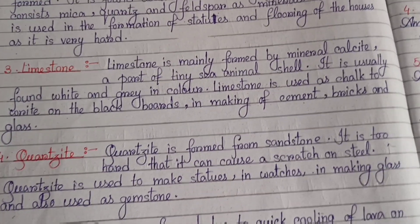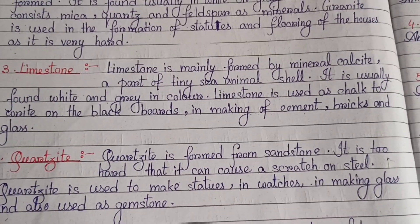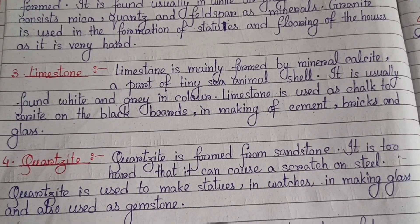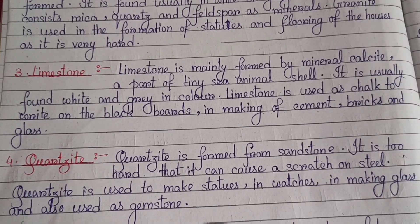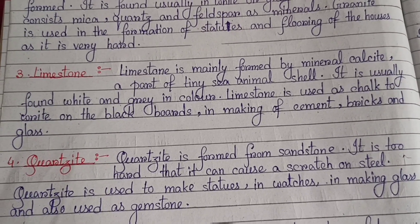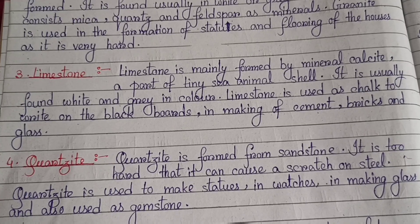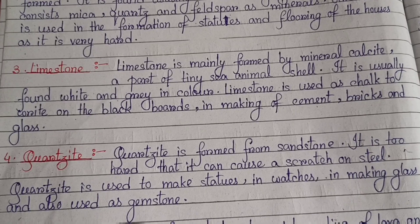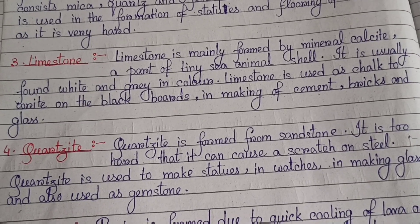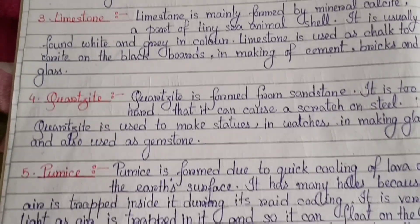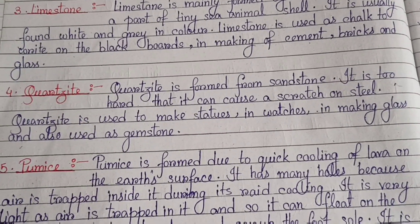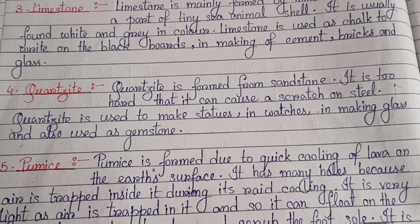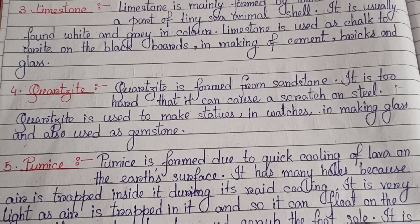Number three: Limestone — limestone is mainly formed by mineral calcite, a part of tiny sea animal shells. It is usually found white and gray in color. Limestone is used as chalk to write on the blackboard, and in making of cement, bricks and glass. Number four: Quartzite — quartzite is formed from sandstone. It is so hard that it can cause a scratch on steel.